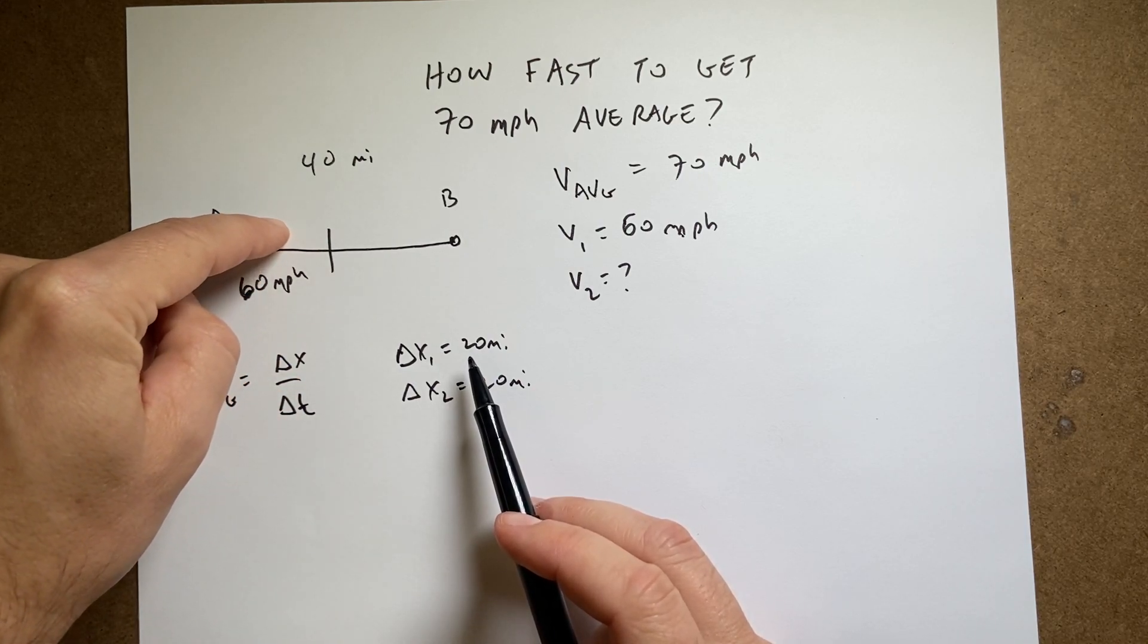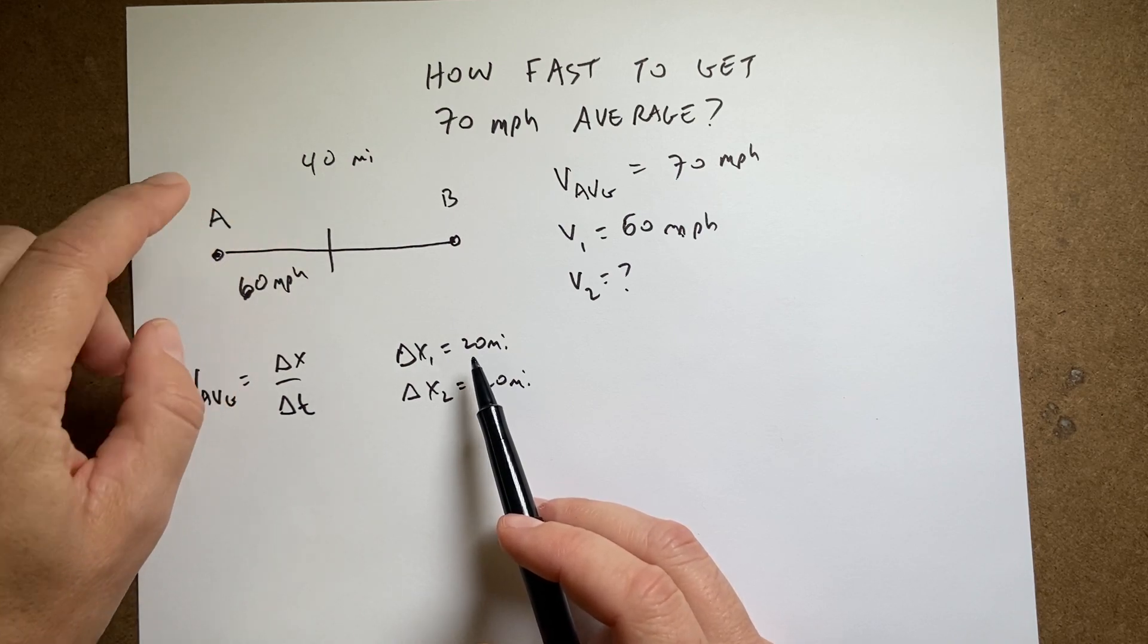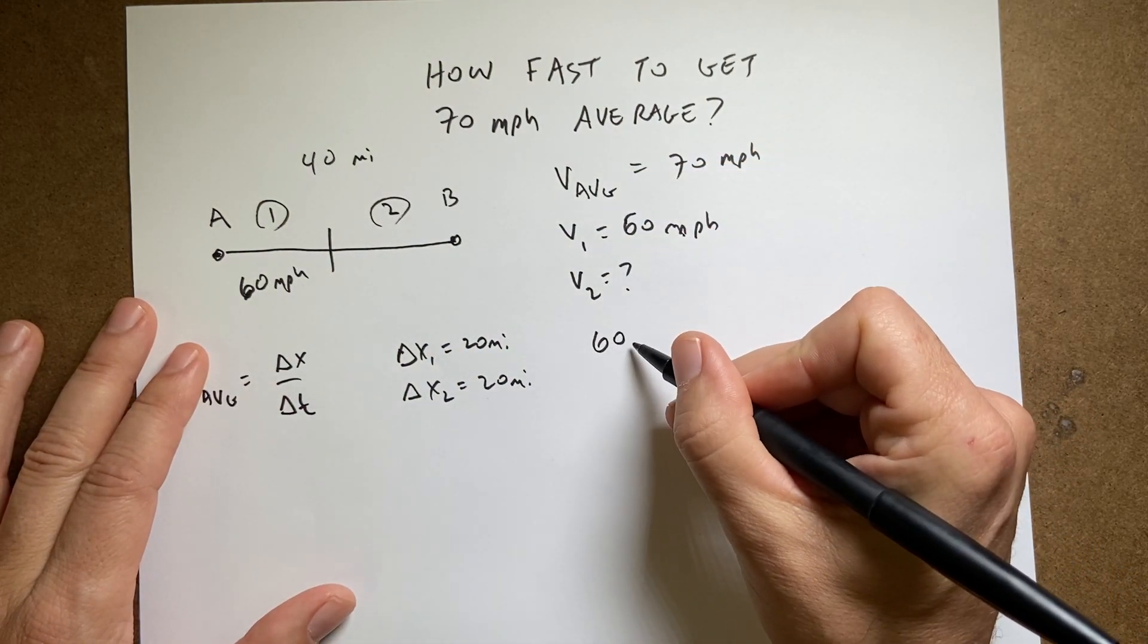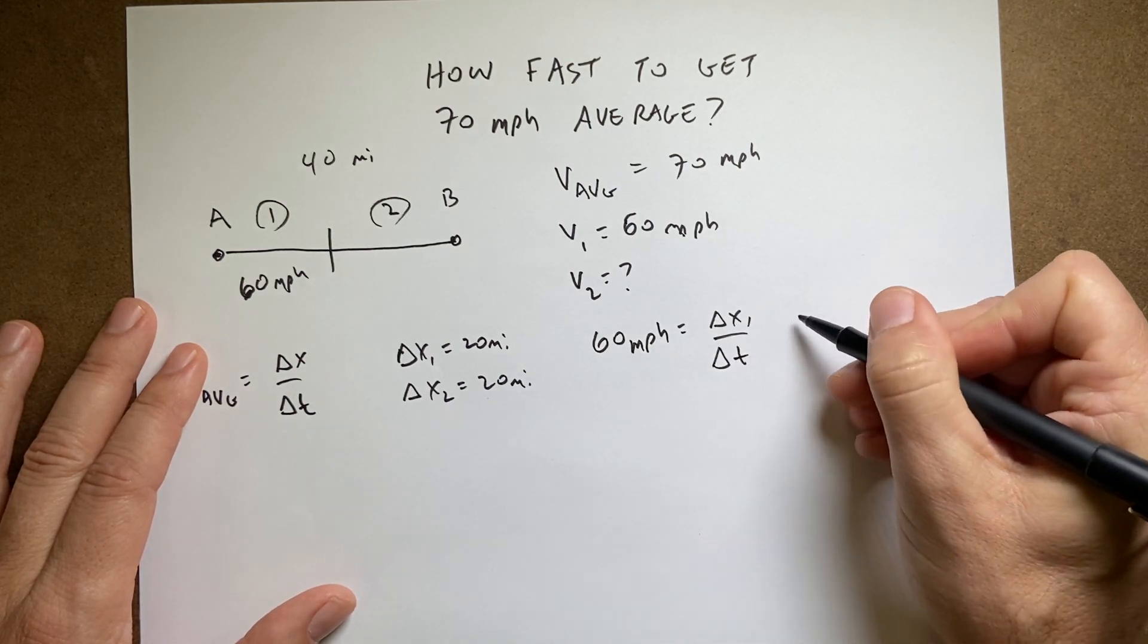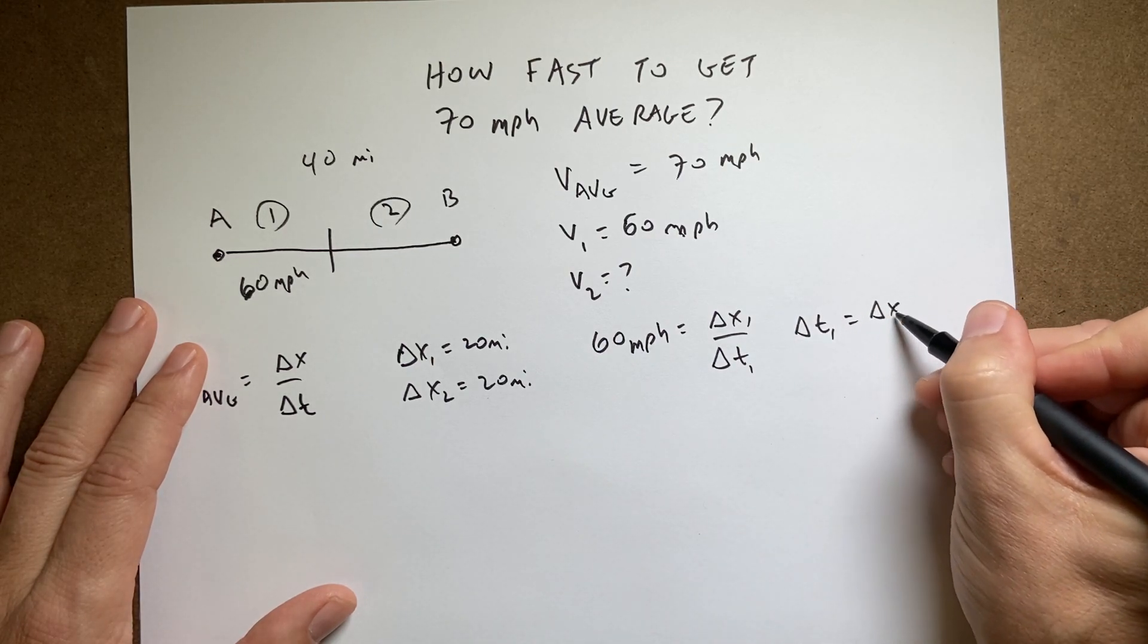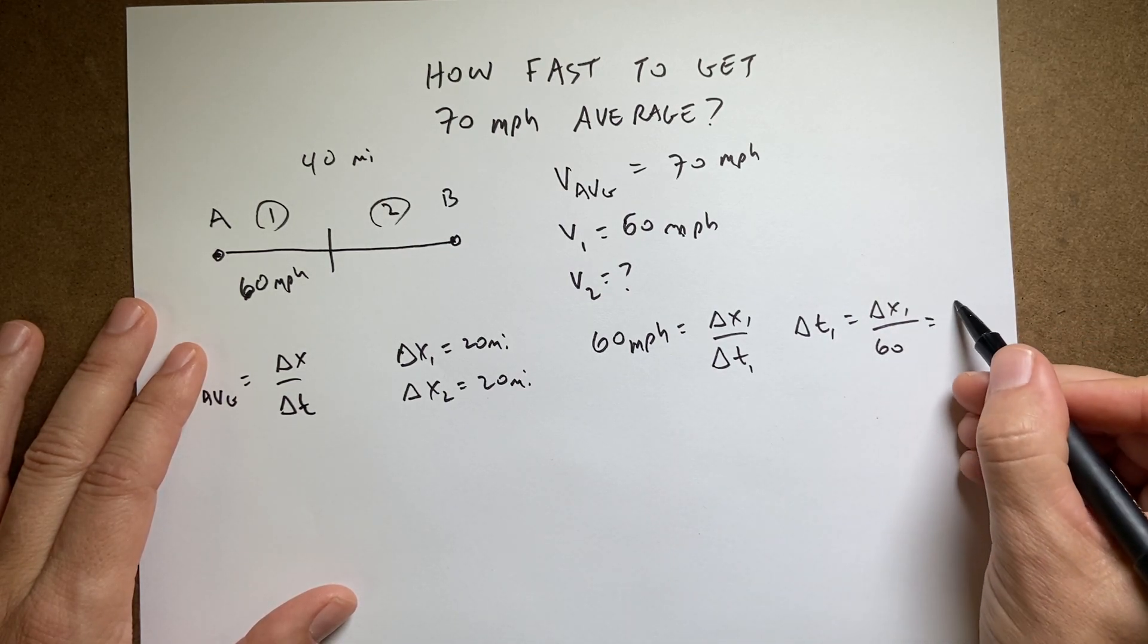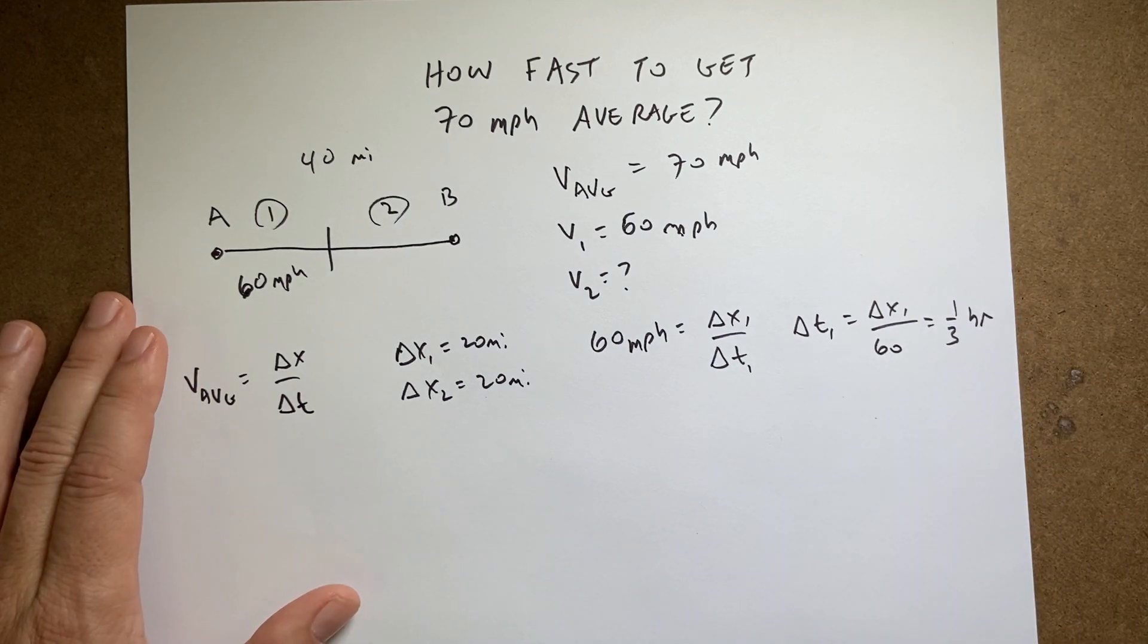So let's go up here and calculate the time for part 1. I'm calling this 1 and this 2. So for 1, I can say 60 miles per hour equals delta x1 over delta t1. So delta t1 is going to be delta x1 over 60. And so I know those two things. Okay, that's actually 20, so this is actually one third hours. Okay, that's not so hard.